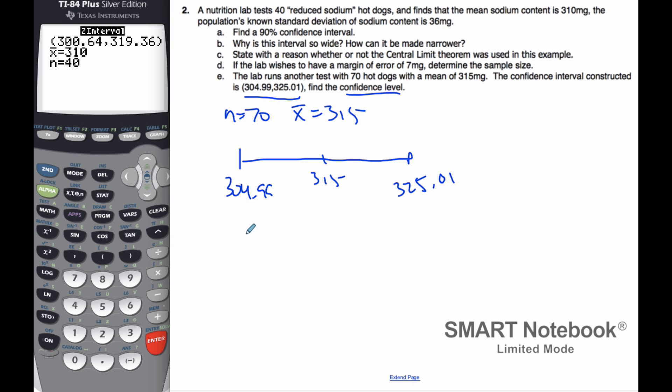Well, I know here is my formula plus Z star σ over root n. I know this here is 315. I can just do one of these values. I don't have to do plus or minus. I can just choose one of them.